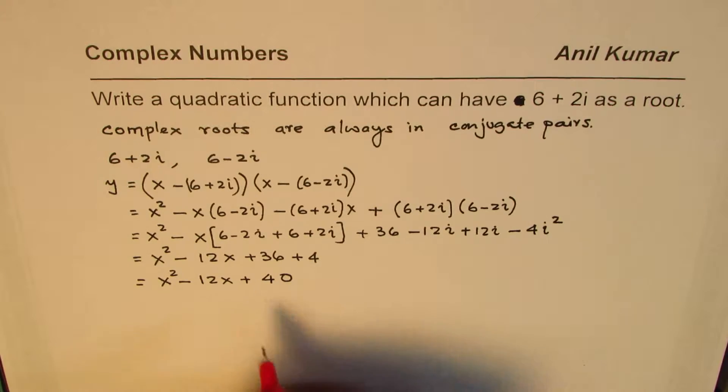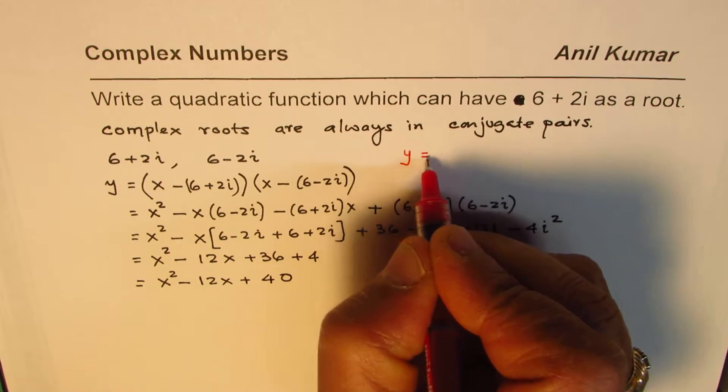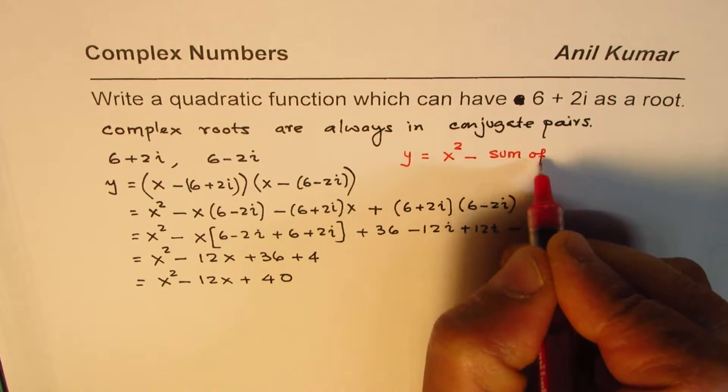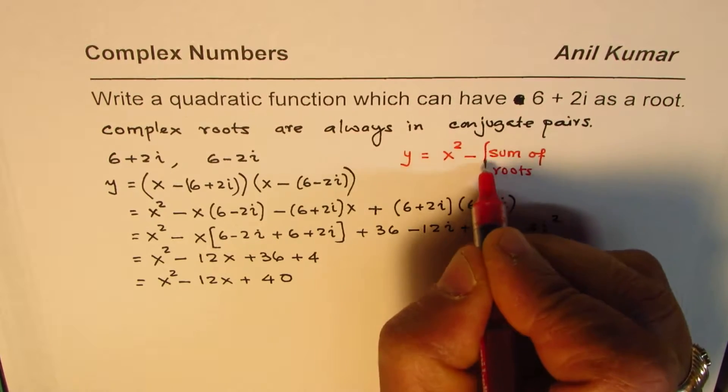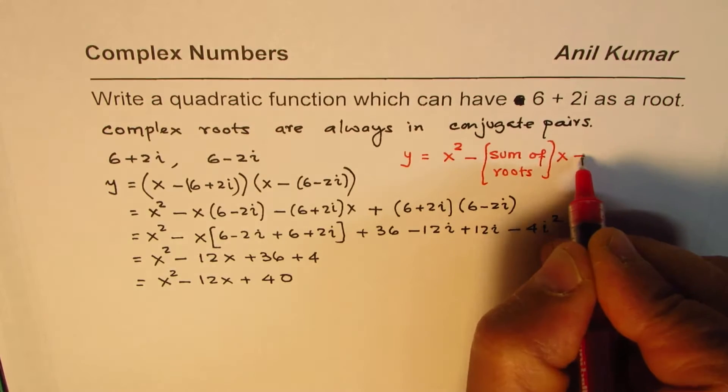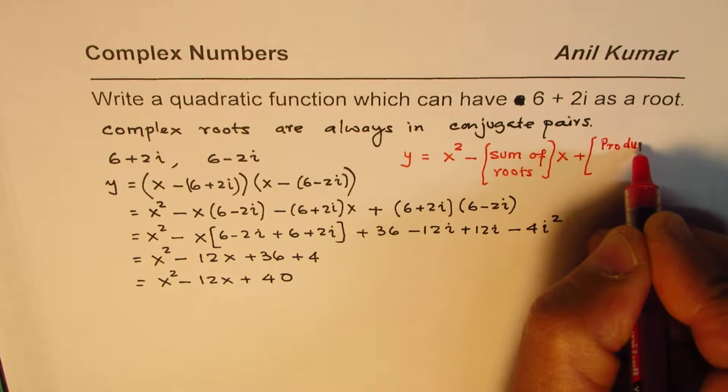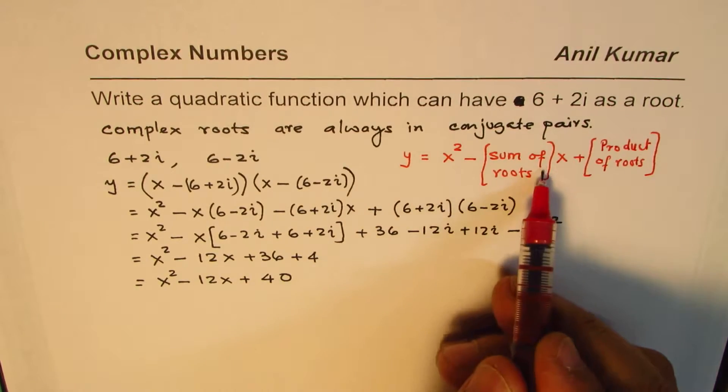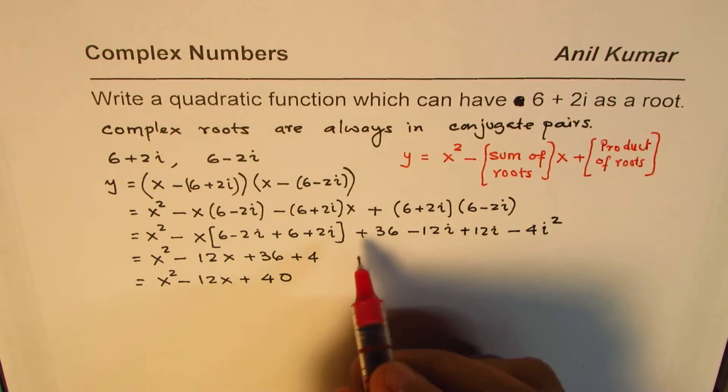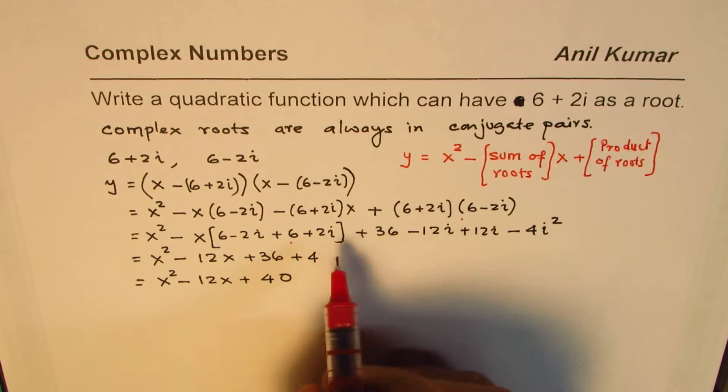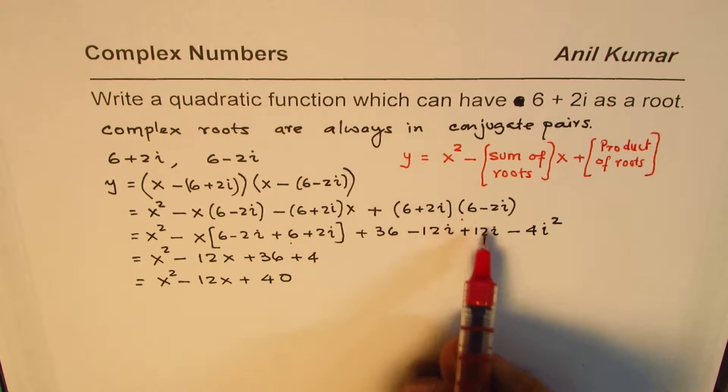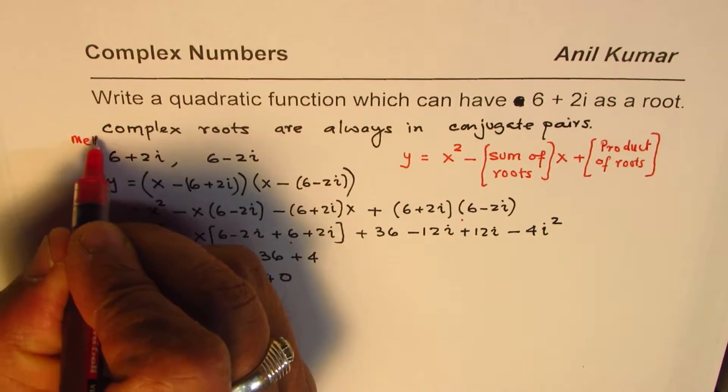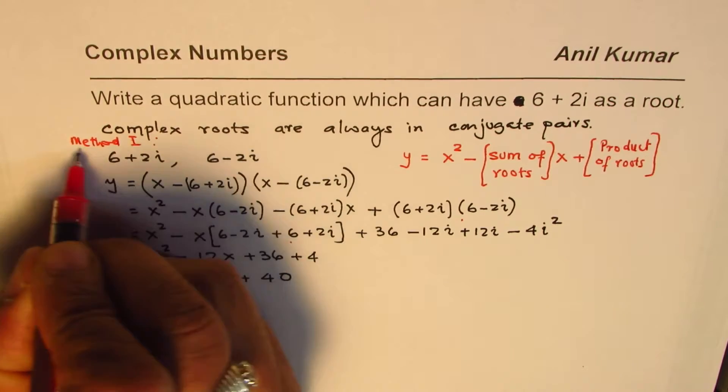We could have also started with this that the equation y is equals to x square minus sum of roots times x plus product of roots, right? So, we could have started like this, given two roots. So, then in that case, we could have written this statement and found the quadratic equation. I will call this as my method 1.